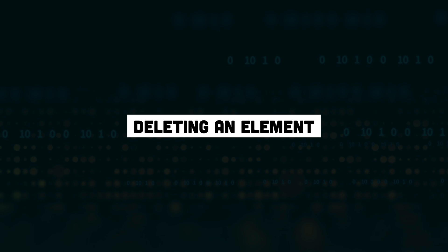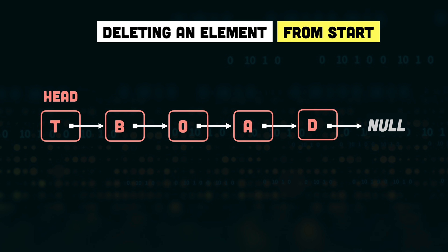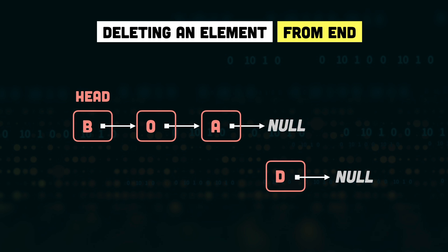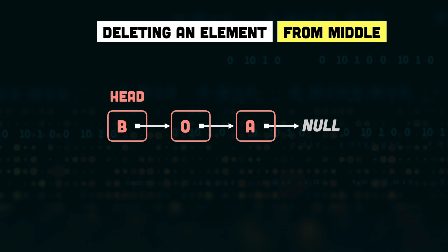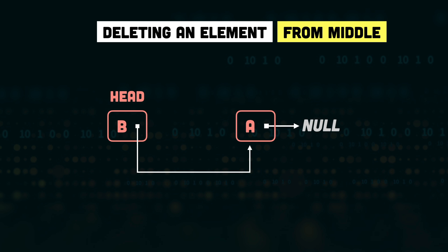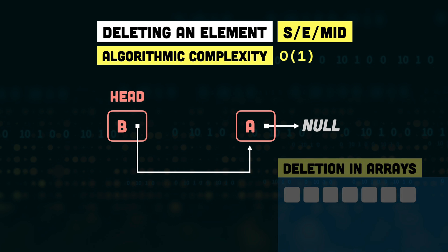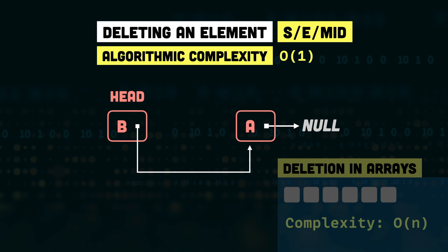Next we have deletion from a linked list. To delete an element from the start, all we have to do is change the head to be the second element. To delete from the end, we make the second-to-last element refer to null instead of the last node. To delete from the middle, we take the node before the node to be deleted and make it refer to the node after the deleted node. The complexity of deleting a node from start, end, or middle is constant, O(1). By comparison, deleting from arrays — for example, deleting the third element and pulling all elements back to fill the empty space — has linear complexity, O(n). Deletion from linked lists is much, much faster than from arrays.